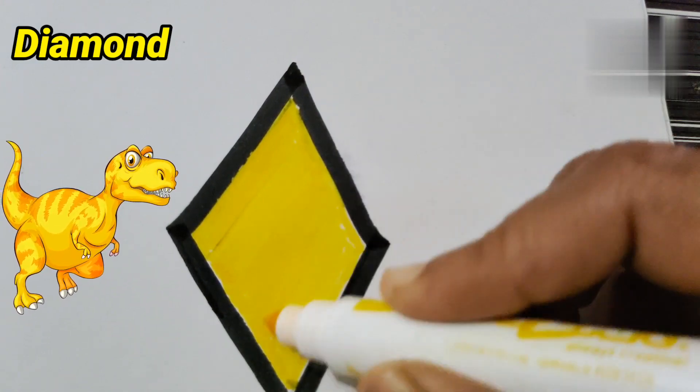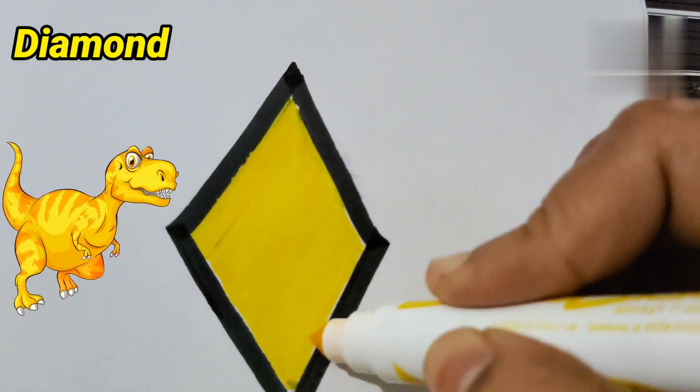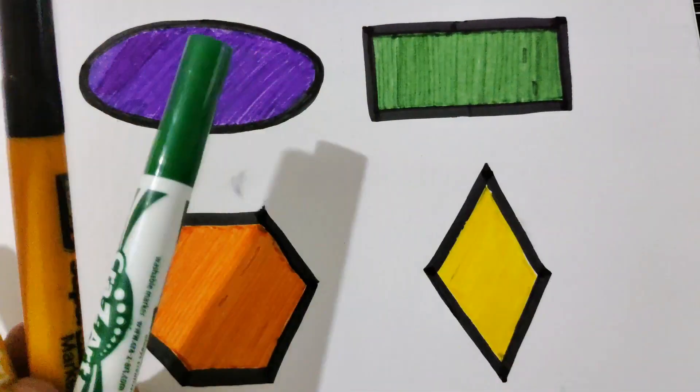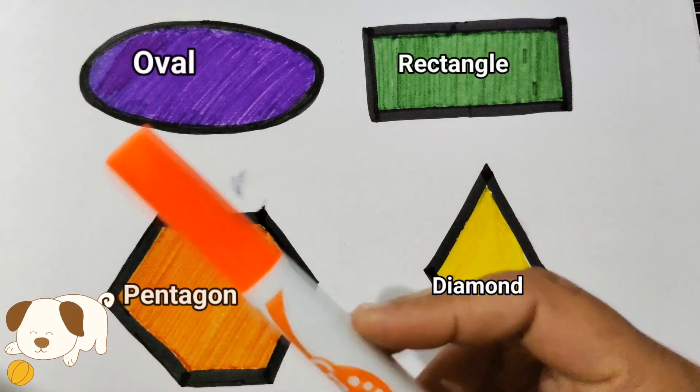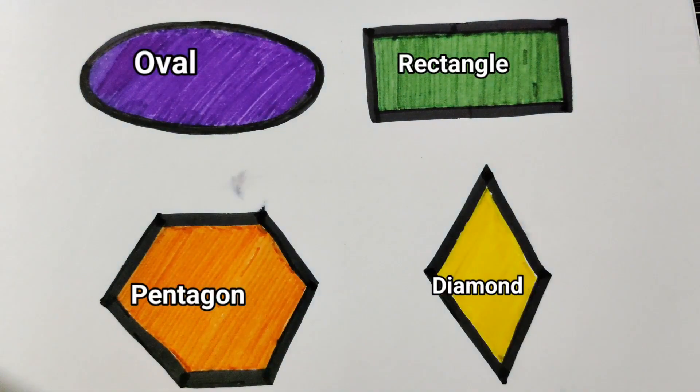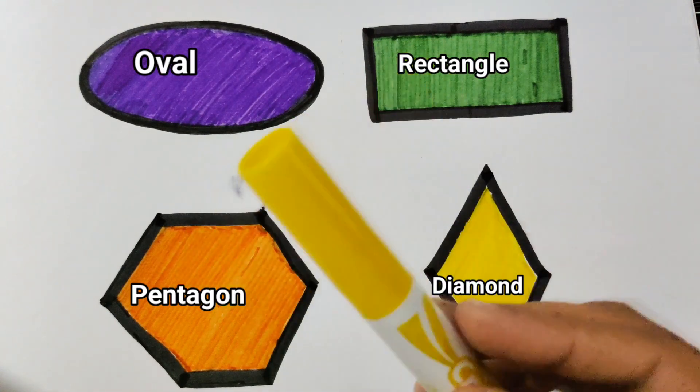We have created orange color pentagon, purple color oval, green color rectangle, yellow color diamond.